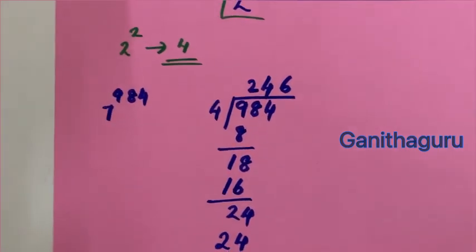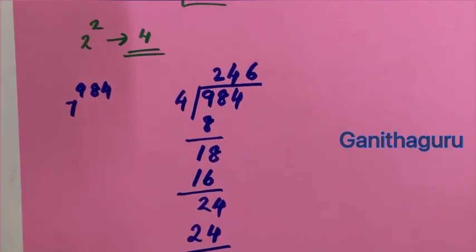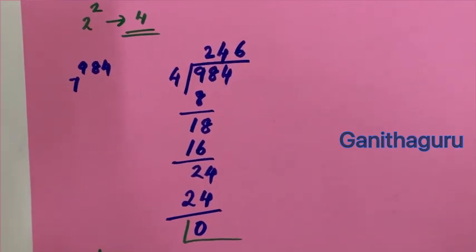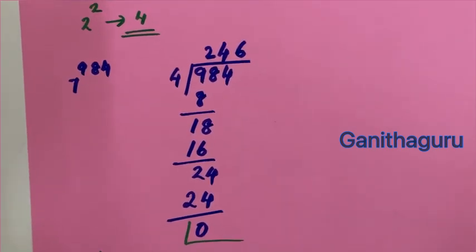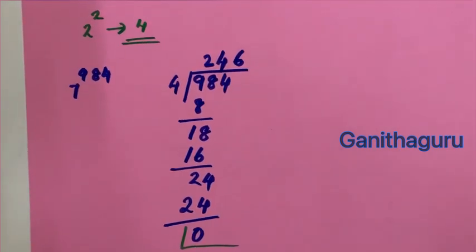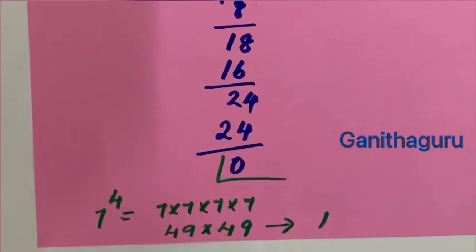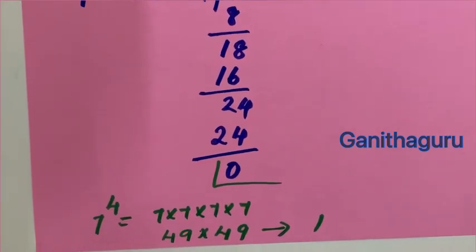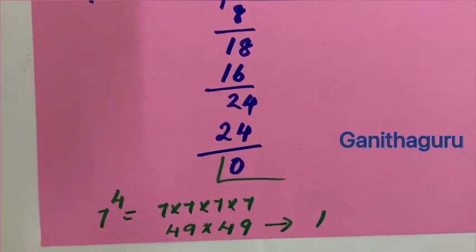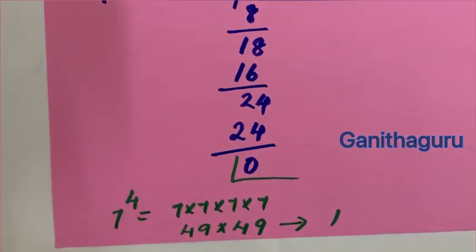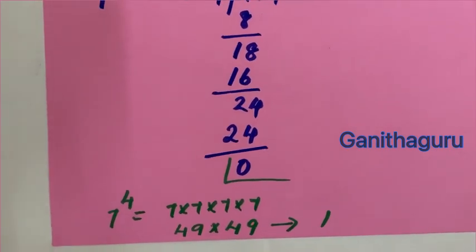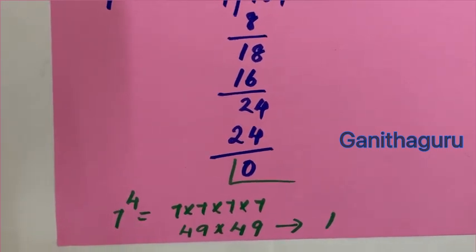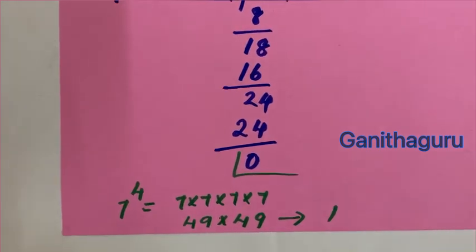For 7 raised to 984: 984 divided by 4 gives remainder 0. So last digit is 7 raised to 4. 7×7 is 49, 49×7 is 343, 343×7 is 2401. The last digit is 1.